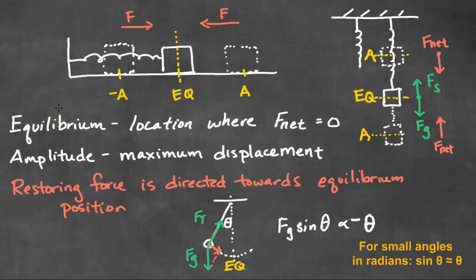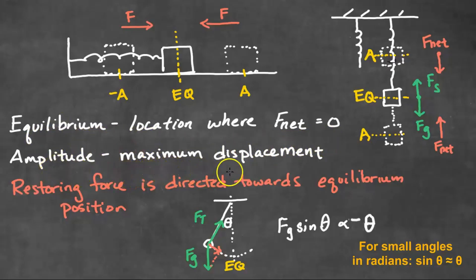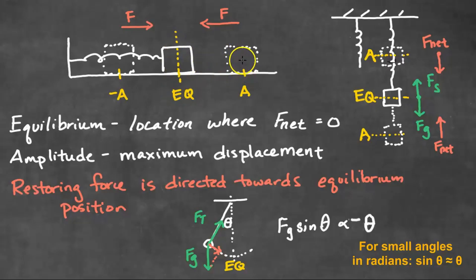Now we're going to take a look at some terms you'll hear when we talk about oscillations. The first is equilibrium — this is the location where the net force equals zero. The amplitude is the maximum displacement. Here we have a horizontal spring. Here is the equilibrium where the net force is zero. We pull it to the right — here is the amplitude. When we let go, it's going to start moving to the left, and there's also an amplitude on that side as well.